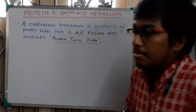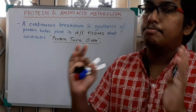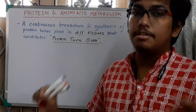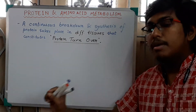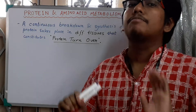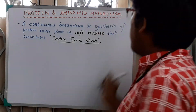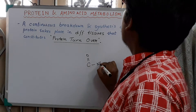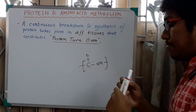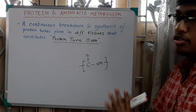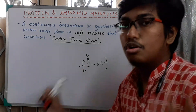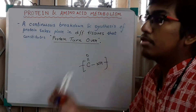Protein and amino acid metabolism are something different. A protein is an amino acid chain — a polypeptide chain. Numerous amino acids are joined together by peptide bonds. The peptide bond is the CO-NH bond. By this peptide bond, different amino acids are joined together to form a polypeptide chain, which is known as protein.